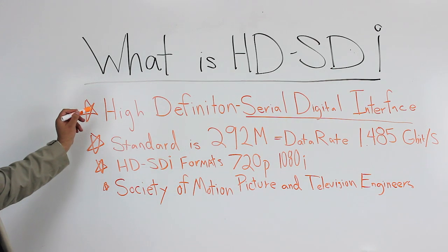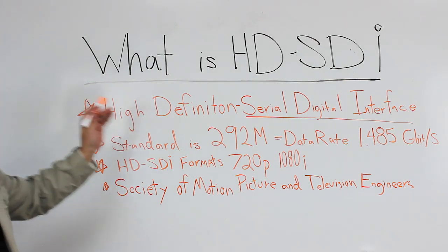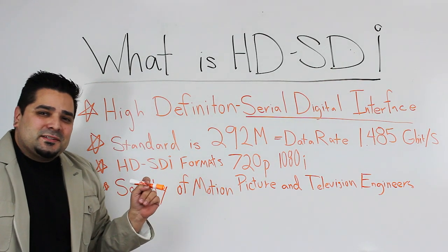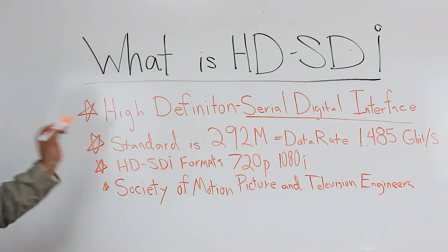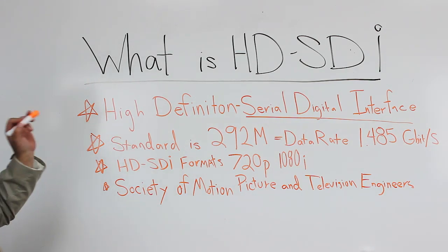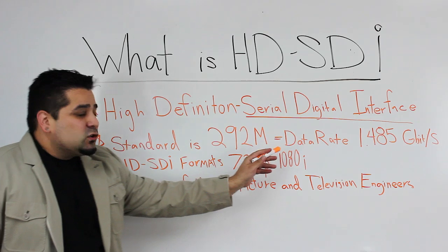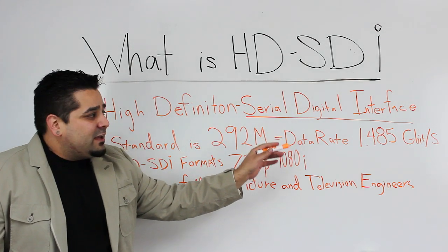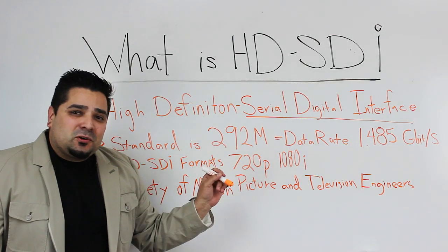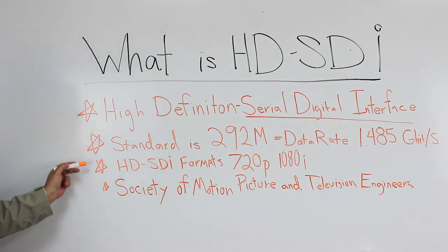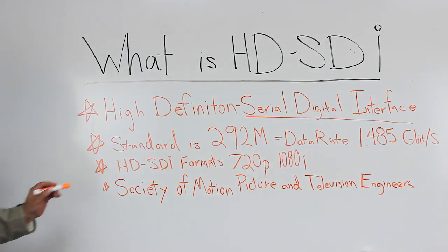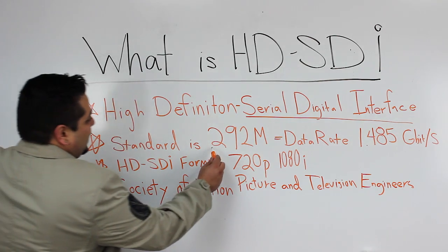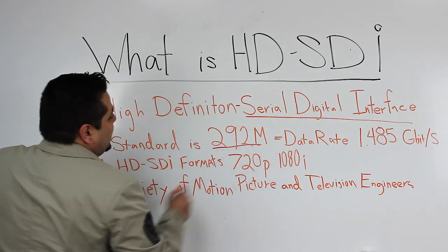So what is HD SDI? HD SDI stands for High-Definition Serial Digital Interface. The standard is actually called 292M, and the data rate is 1.485 gigabits per second. The HD SDI formats are 720p and 1080i.